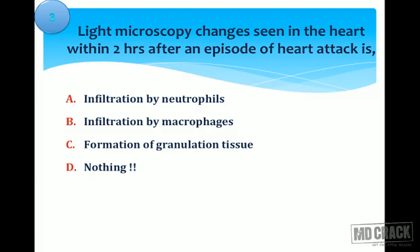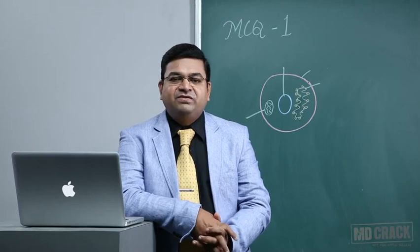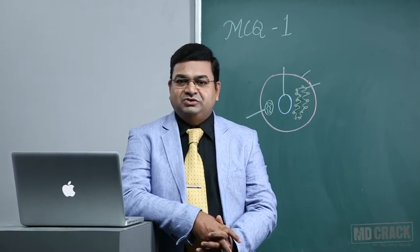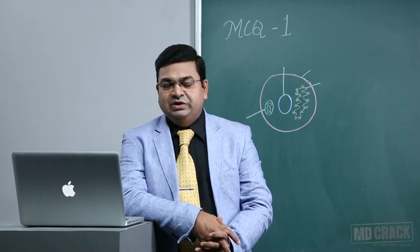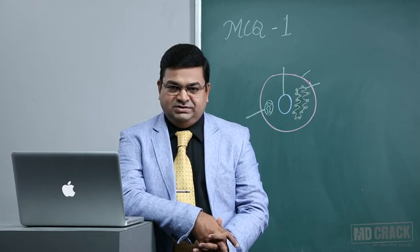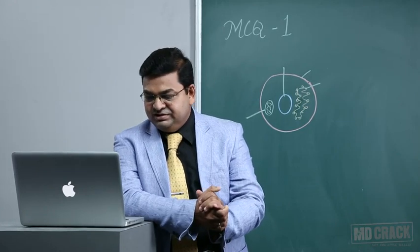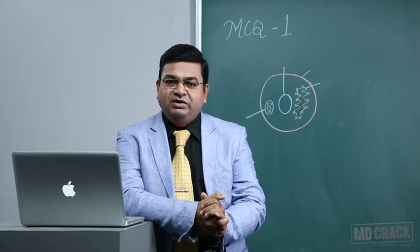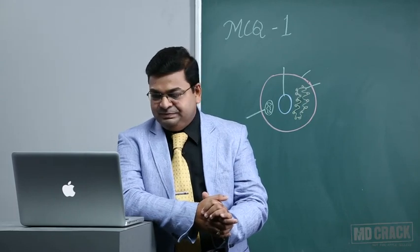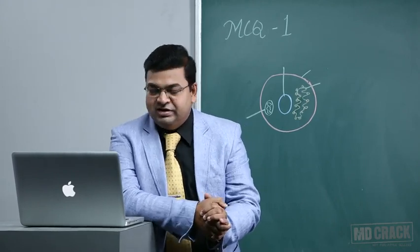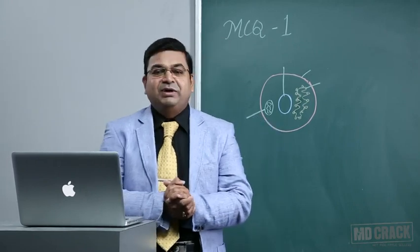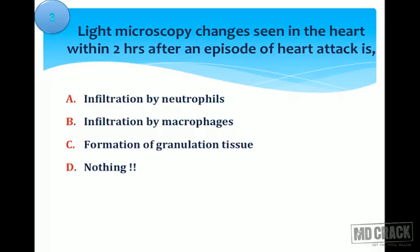Options are: infiltration by neutrophils, infiltration by macrophages, formation of granulation tissue, or nothing. Neutrophils are the first cells to respond in inflammation, followed by macrophages. But it is only two hours. Granulation tissue formation takes very long time — absolutely wrong. Neutrophils come only after 12 hours, so nothing will be seen on light microscopy. The answer is nothing.